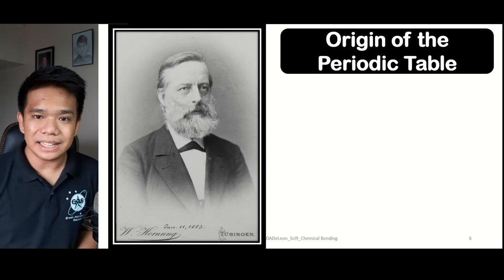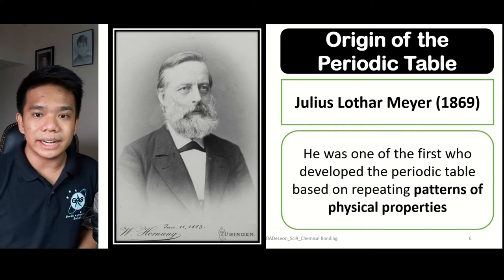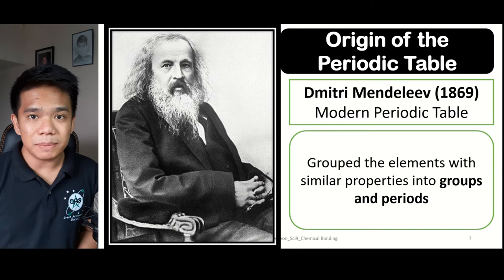It was in 1869 where the modern periodic table was developed. Julius Lothar Meyer in 1869 was the first one to develop a certain idea in which elements are arranged based on their physical properties. But the modern periodic table that we all know today was also formulated in the same year, wherein a Russian scientist named Dmitry Mendeleev grouped the elements based on their similar properties into groups and periods.